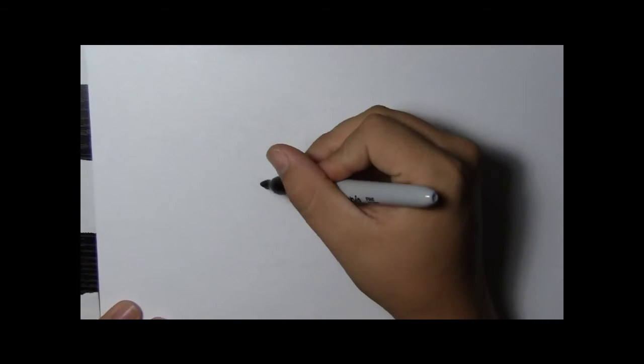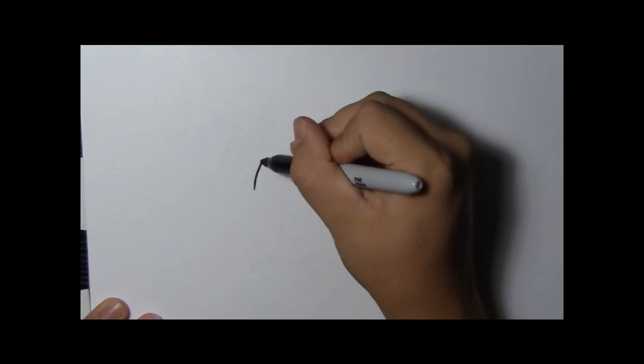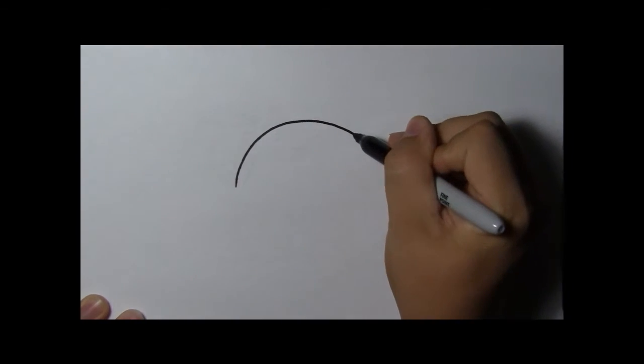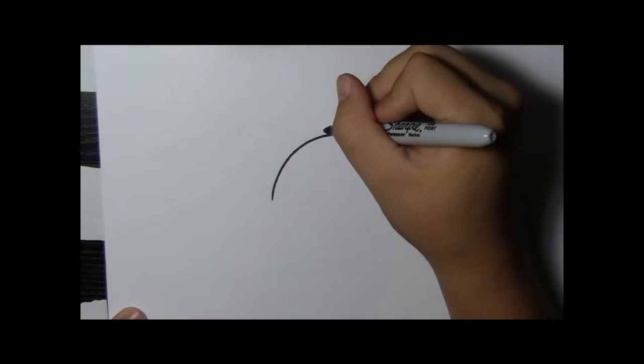There are all sorts of kinds of fish. We're going to draw our own. Let's start by drawing half a circle. This is the top of our fish.